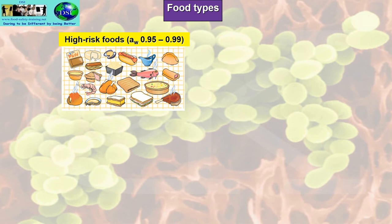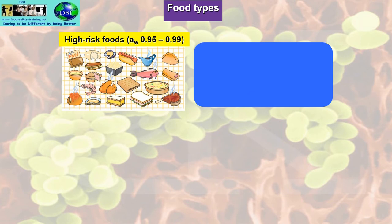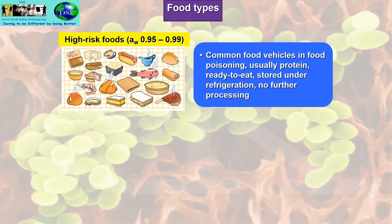High-risk foods have a high protein content. Examples include pâtés, cold cheeses, seafoods such as prawns and mussels already cooked, pork pies, quiches, sandwiches, ham sandwiches, sausage rolls — all these items are usually cold. They're common food vehicles in food poisoning: usually protein, ready to eat, stored in refrigeration, with no further processing or reheating required.